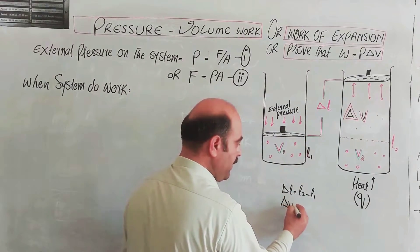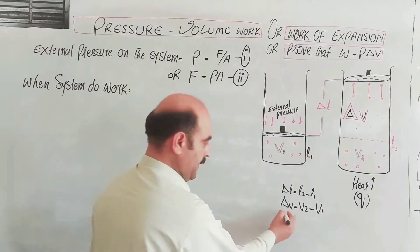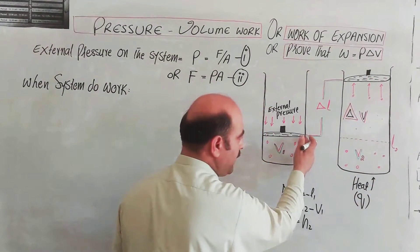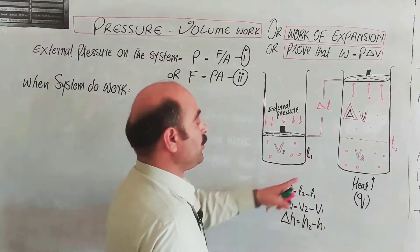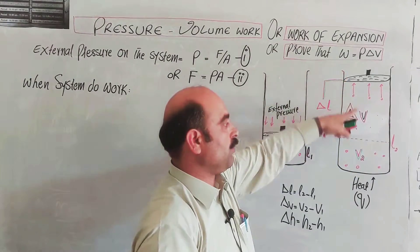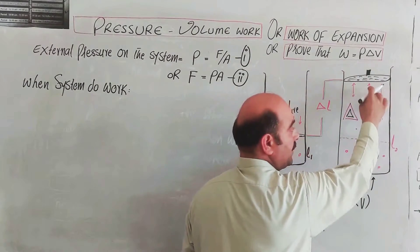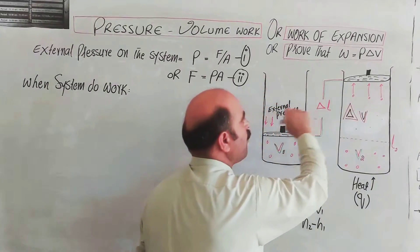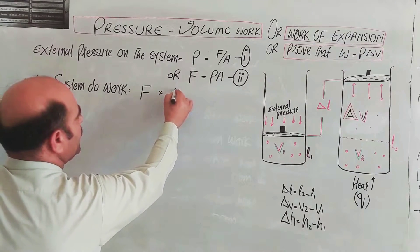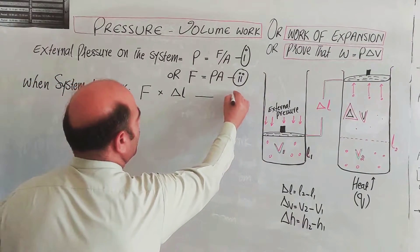Change in volume delta V equals V2 minus V1. Change in height delta H equals final height H2 minus initial height. When heat is supplied, the volume changes and the piston moves. Work done equals force multiplied by distance — force multiplied by change in length. This will become equation number 3.